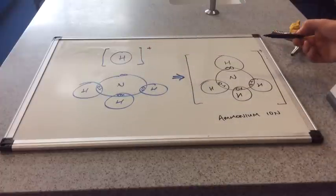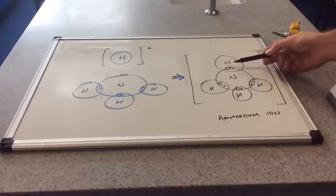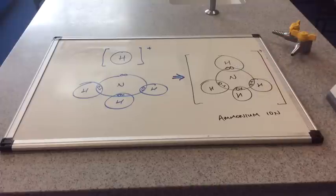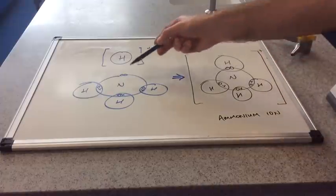The new bond you can see here is still a covalent bond between nitrogen and the hydrogen. They're still sharing this pair of electrons, but both of the electrons have actually originated from the nitrogen.